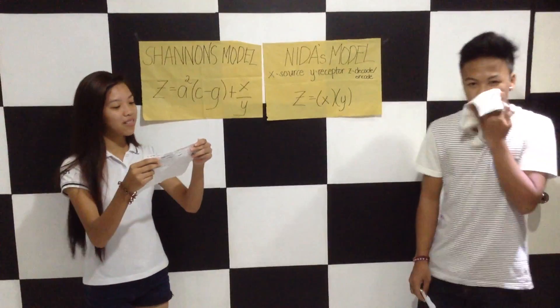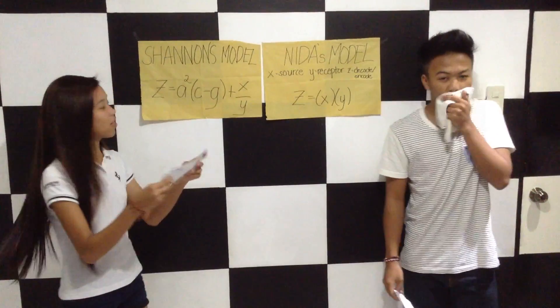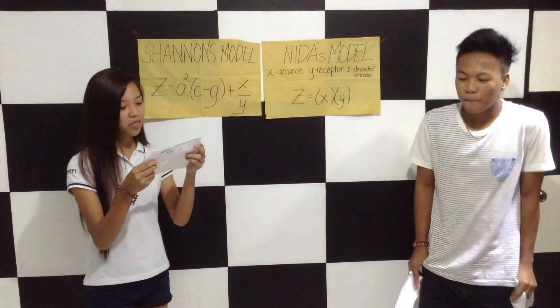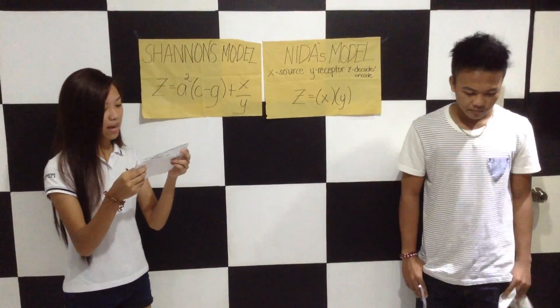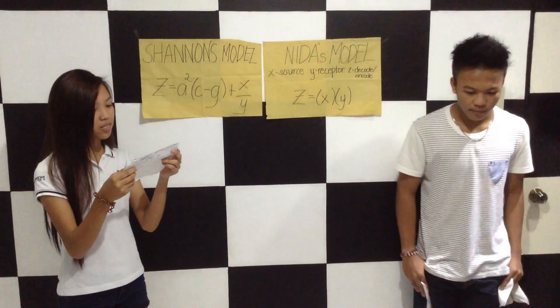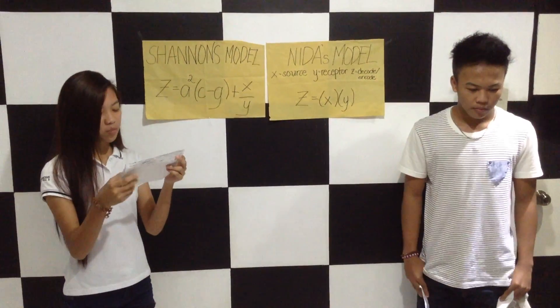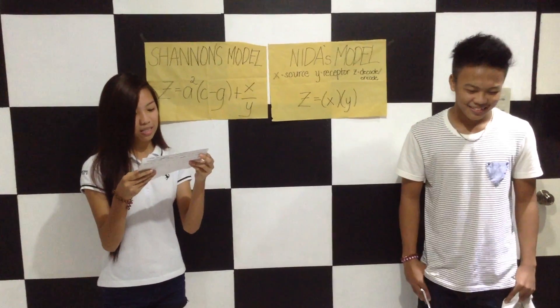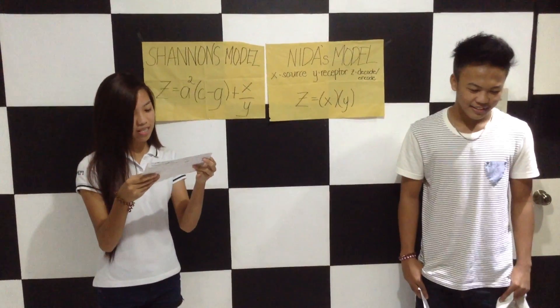I will discuss the equation about Shannon's model. The info source will be A, message is B-squared, transmitter is C, signal is F, noise source is G, receiver is X.